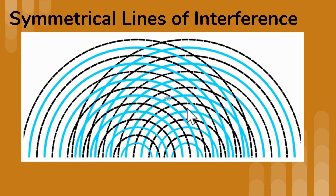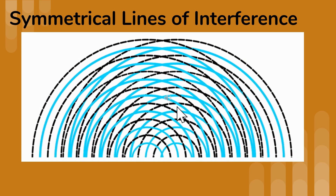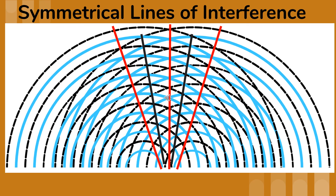The left side is symmetrical to the right side. Let's take a closer look at this picture. The red lines show you where the constructive interference occurs — where the crest meets a crest and the trough meets the trough. The black lines show you where the destructive interference occurs — where the crest meets a trough.